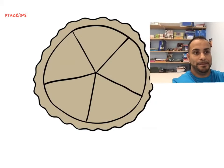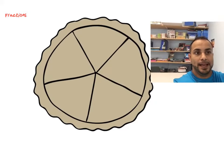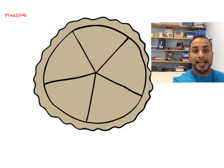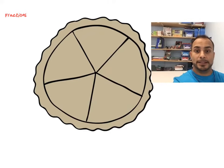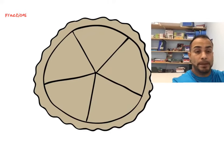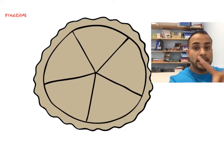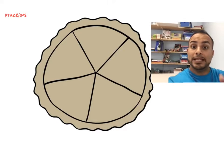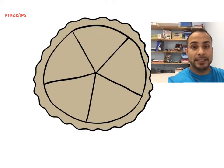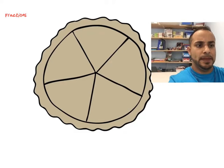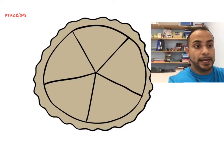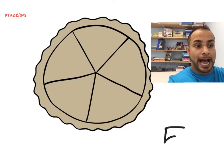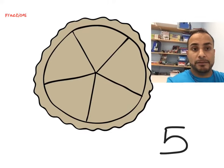Let's use this pie. This pie has been cut into five pieces. But before it was cut, it was one — it still is, it's one pie. But now it consists of five slices. So I could say that this entire pie is out of five, because it's out of five pieces.